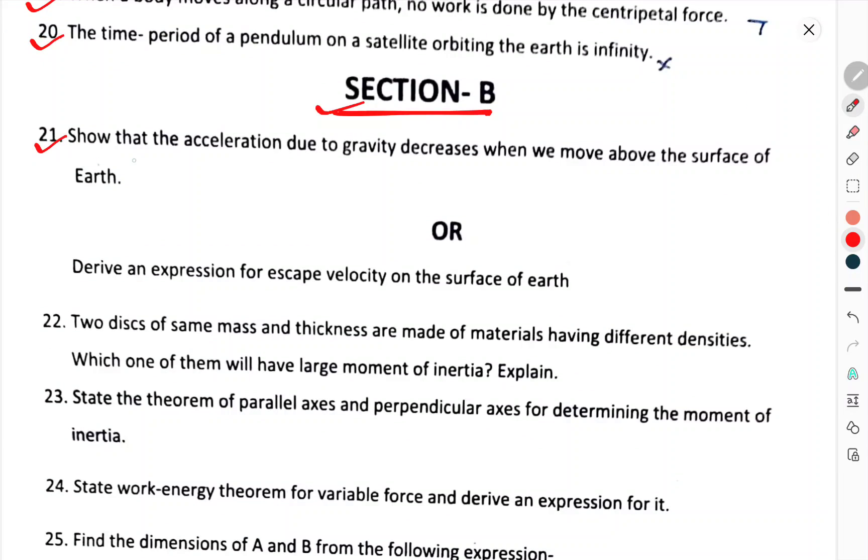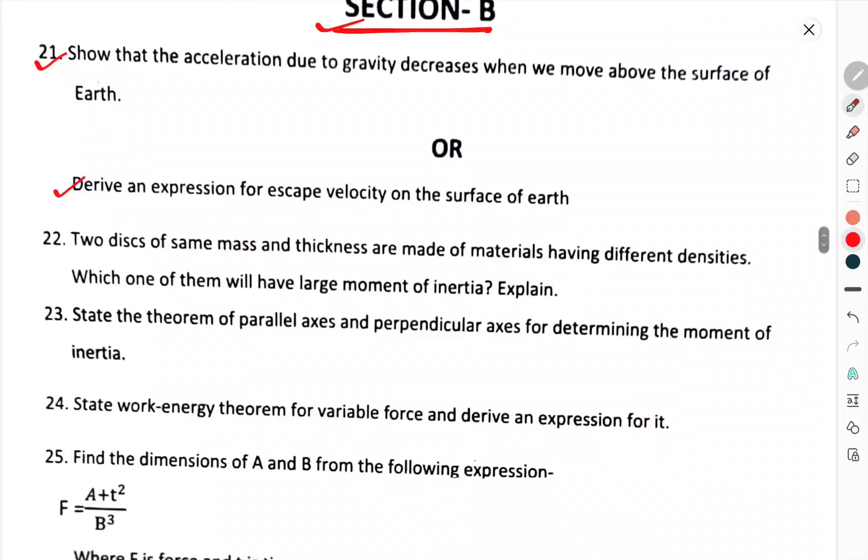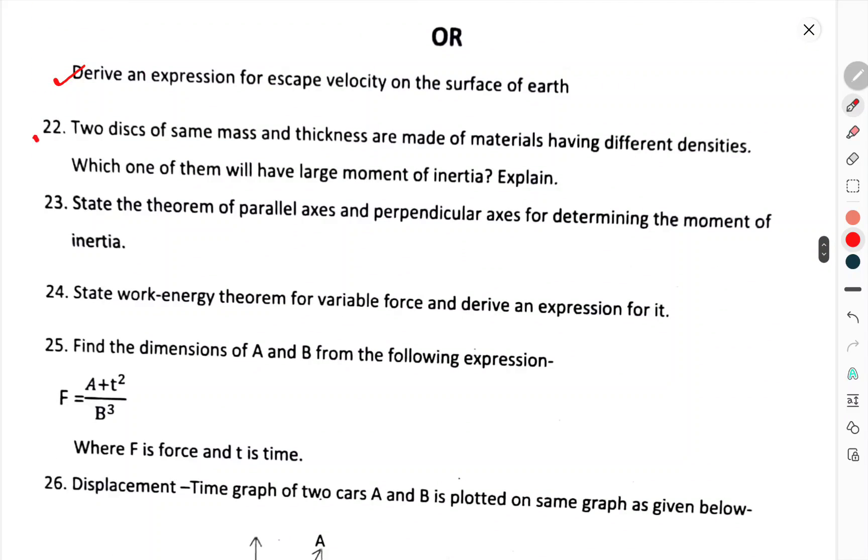Section B. Question number 21. Show that the acceleration due to gravity decreases when we move above the surface of the earth. Or derive an expression for escape velocity on the surface of the earth. Question number 22. Two disks of the same mass and thickness are made of material having different densities. Which one of them will have large moment of inertia? Explain.